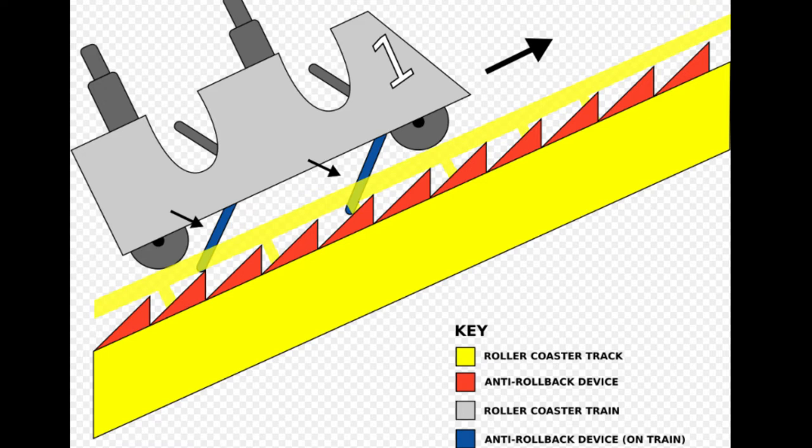Now you may be asking, how does the coaster lock onto the anti-rollback device or the chain lift hill? As you can see, those two blue rectangles on the bottom of the coaster car each serve a purpose.